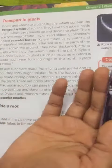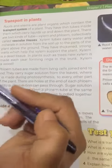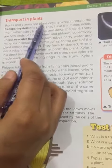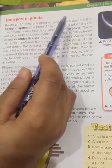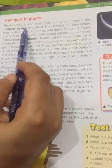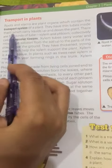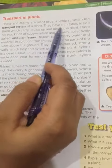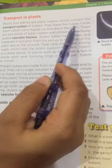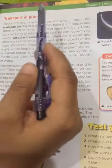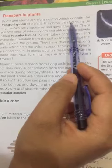What kind of transportation is in different minerals or different things? Let's read about that. Roots and stems are plants' organs which contain the transport system of a plant. They have thin tubes inside them which carry liquid up and down to the plant. The root or stem has to transport the liquid inside the plant.